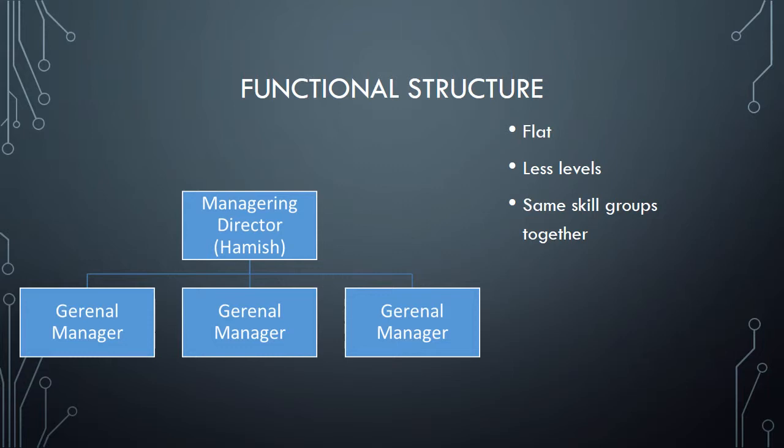There is a short chain of command to get information to the top. There is also unity of command, as employees and students report directly to one manager who reports to the managing director at the top. As the structure is flat, this means that the authority is strong, meaning that when the managing director wants something done, there isn't a large line of command for him to go through.